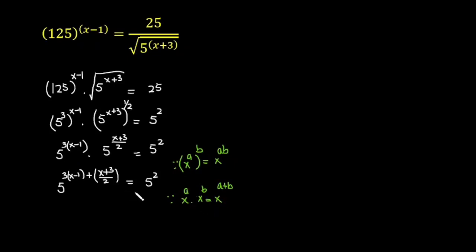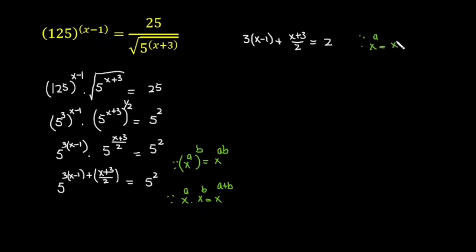In the next step, since the bases are the same, I am going to equate the powers. The rule states: if x raised to the power a equals x raised to the power b, then a equals b. Applying that rule here — bases are the same, so I equate the powers — giving: 3x minus 1 plus x plus 3 over 2 equals 2.